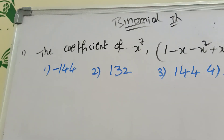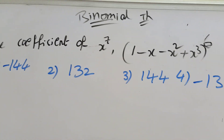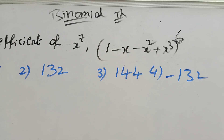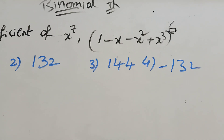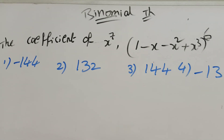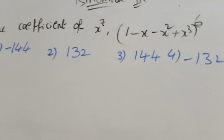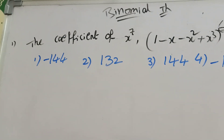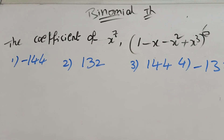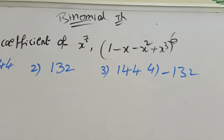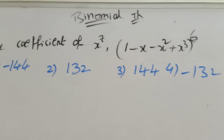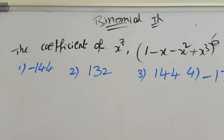Now in this second video, find the coefficient of x power 7 in (1 minus x minus x square plus x cube) whole power 6. The options are minus 144, 132, 144, minus 132.